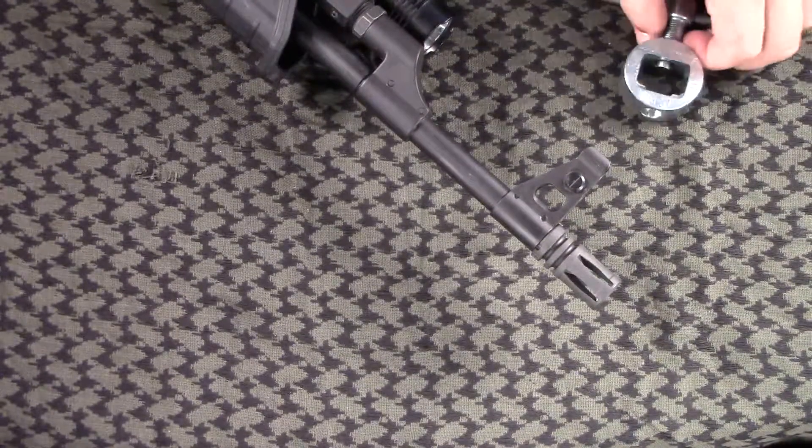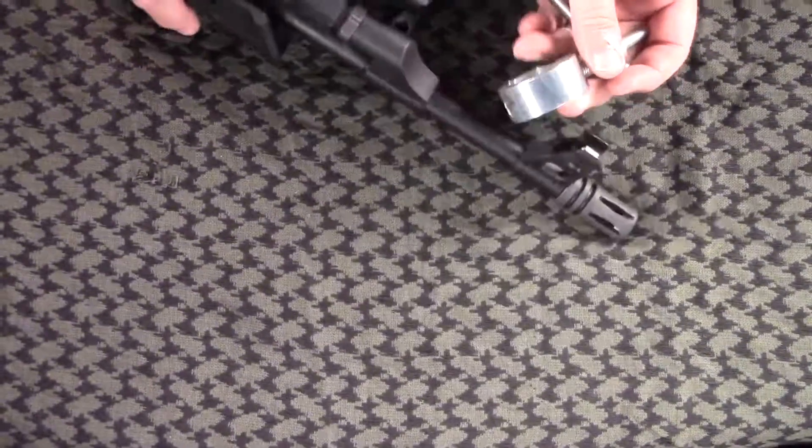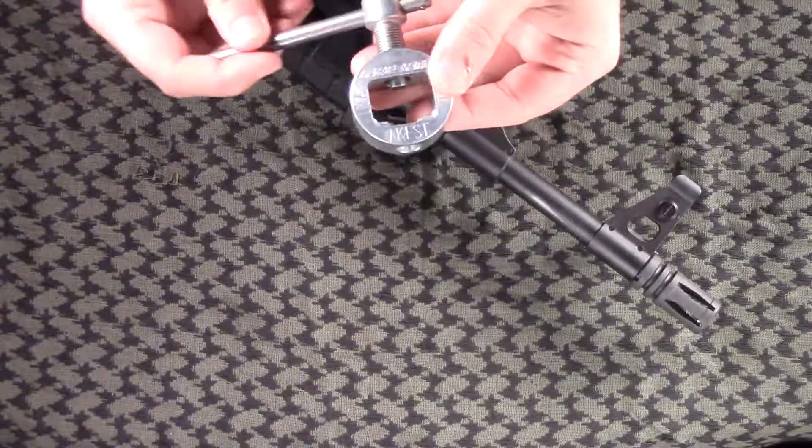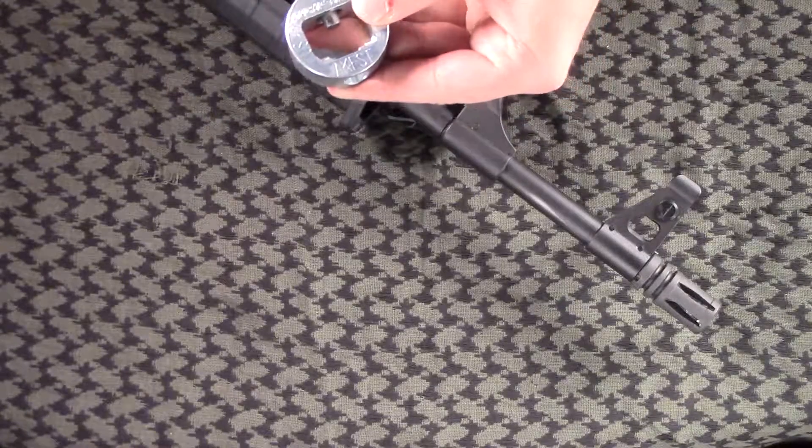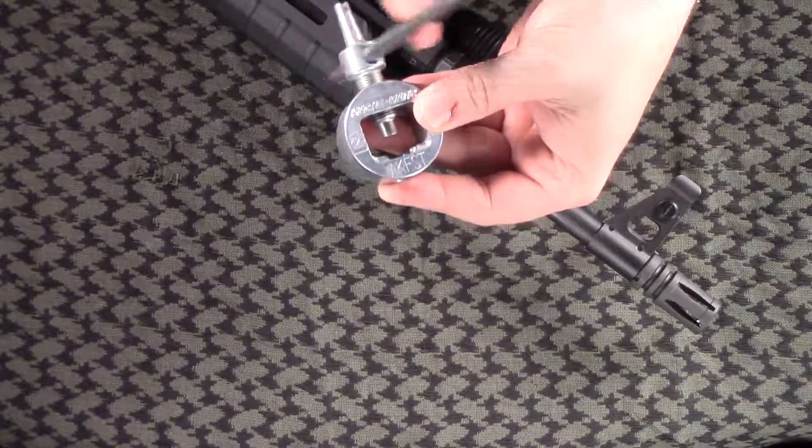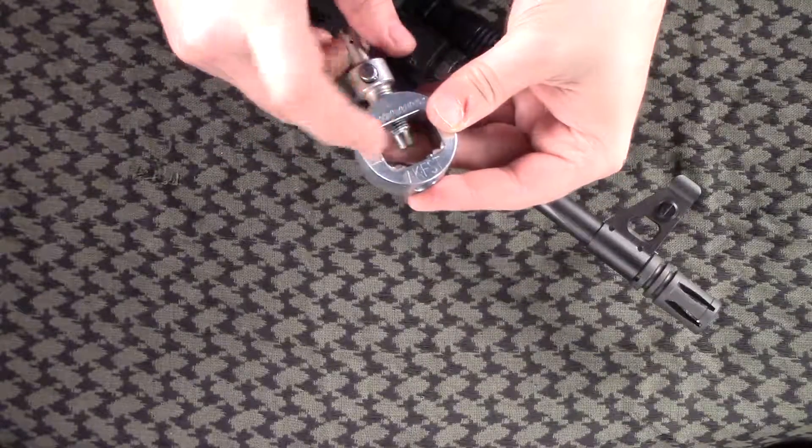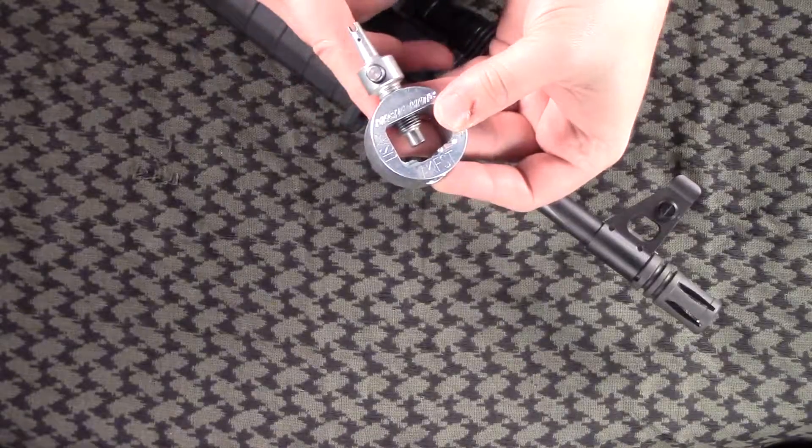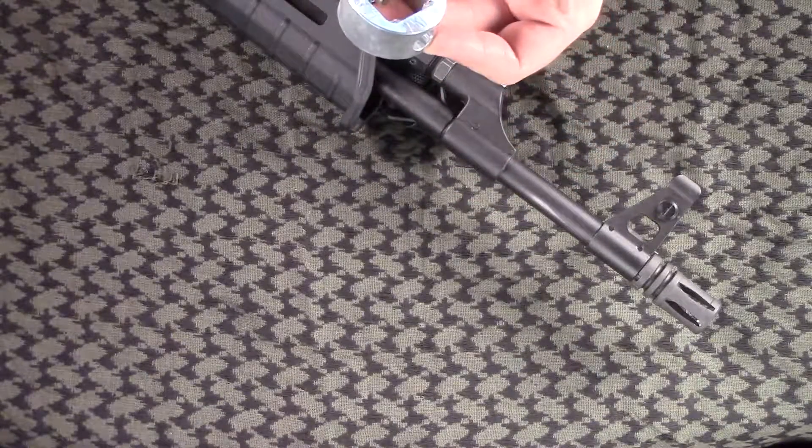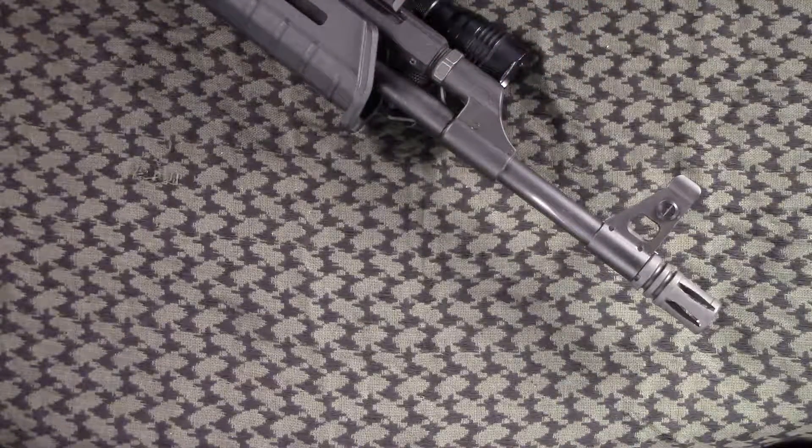And what the sight tool does is, as you rotate this portion, you can see that central part right here, pushing forward. And what you do is you use that to drift the front sight left or right depending on what kind of adjustment and windage that you need.